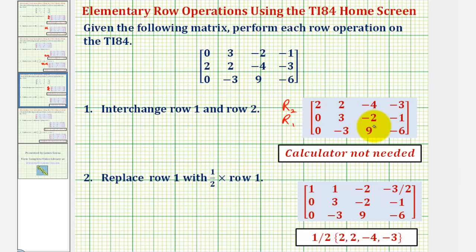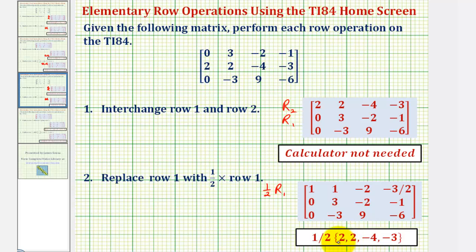Now we want to take this new matrix and replace row one with one-half times row one, so the new row one is one-half times the old row one. To do this on the calculator, we enter one-half times row one of this matrix. Notice how we enter one-half using braces — not parentheses — with the elements of the original row one separated by commas. That's not hard to do by hand, but let's go ahead and verify this on the calculator.